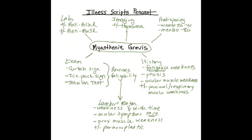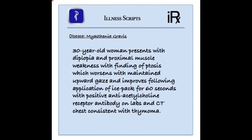Taken altogether, an illness script for myasthenia could read: A 30-year-old woman with diplopia and proximal muscle weakness with finding of ptosis, which worsens with maintained upward gaze and improves following application of an ice pack for 60 seconds, with positive anti-acetylcholine receptor antibody on labs, and CT chest consistent with thymoma.